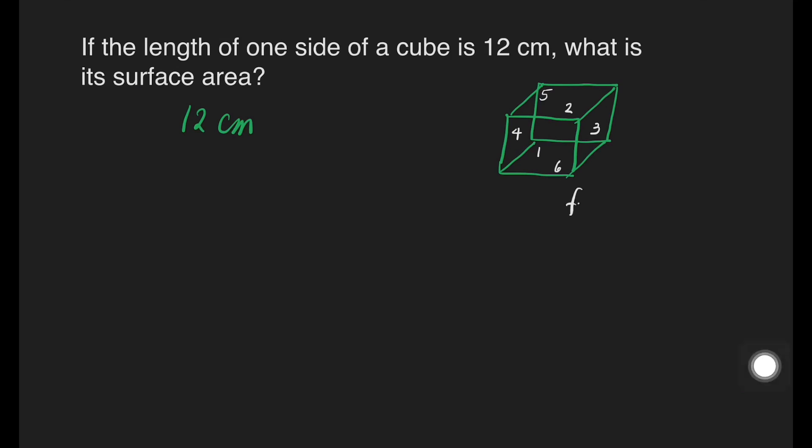How many faces do we have? We have the front, we also have the back, we have the top, we have the bottom, and we have the left, and then we have the right. So, all in all, we have six faces.